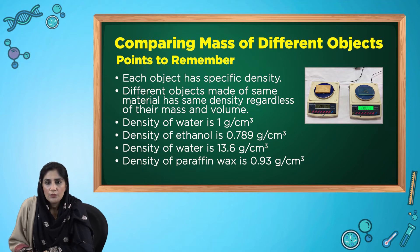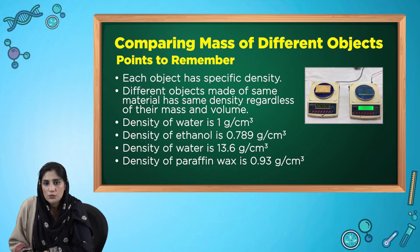Ice is made up of water, but even then it has a density less than water because the arrangement of particles becomes different in it, and that's why it floats on the surface of water.